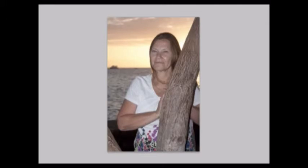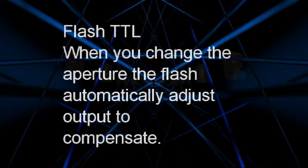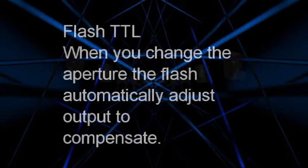When you change your aperture on your camera, the flash knows it if you are in TTL mode. For example, if you are at F8 with TTL on your on-camera flash engaged and you change your aperture from F8 to F11, the flash will automatically compensate for that change and increase flash output for that new F-stop at F11.